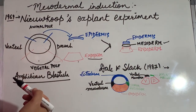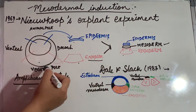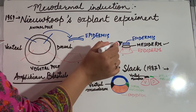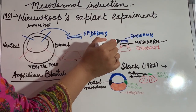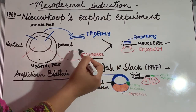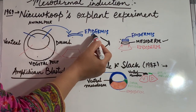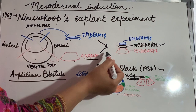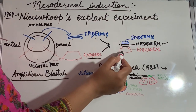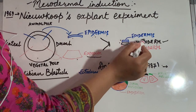How is this mesoderm induced? Nieuwkoop suggested that this layer is induced by the endodermal cells — these are the vegetal cells. They secrete some inducers which convert the animal pole-derived cells into the mesodermal cells. Because when they cultured the animal explant or vegetal explant separately, they had only epidermal or endodermal cells. But when they cultured them together, a new layer appeared — the mesoderm. So the vegetal cells induced the animal explant cells to develop into mesoderm.